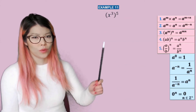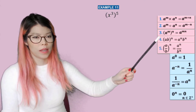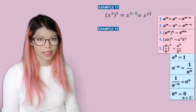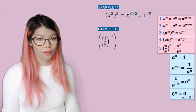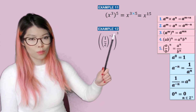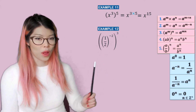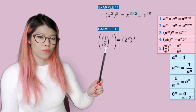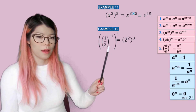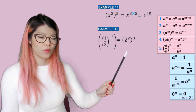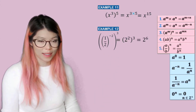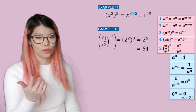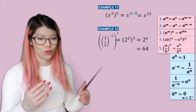Example eleven: what do you do when you have these brackets? That's index law number three — you multiply them. So three times five is 15, so we have x to the 15. Example twelve: again, lots of brackets. Whenever you see brackets, it's time to multiply. So minus two times three is negative six. And if we want the two at the bottom to become a positive power, then we're going to bring it to the top. So two to the power of six, which is 64 — two, four, eight, 16, 32, 64.